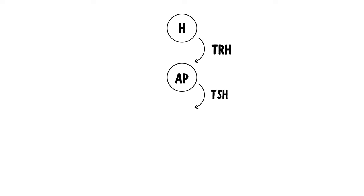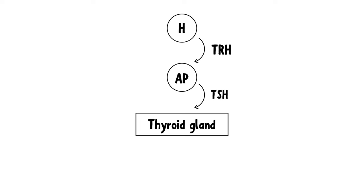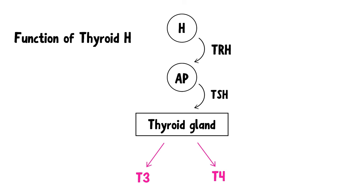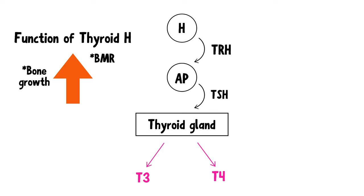TSH stimulates the thyroid gland to produce thyroid hormones like T3 and T4. What is the function of thyroid hormones? Thyroid hormones basically increase everything: they increase the basal metabolic rate, they increase bone growth, they increase blood sugar level, and they can also increase fat breakdown.